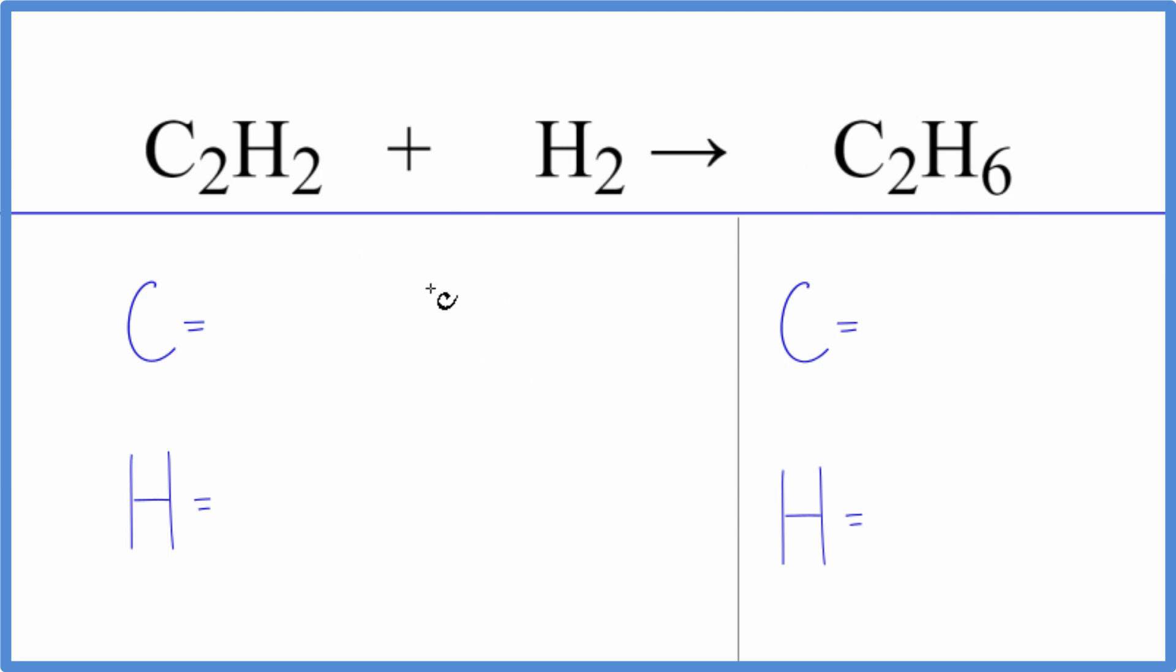So let's count the atoms up and balance the equation. We have two carbons, then we have two hydrogens, plus, make sure you count these two here, four total. On this side, we have the two carbons and six hydrogens.